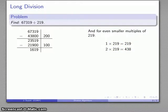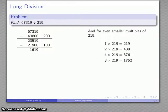I can continue to double: 2 times 219 is 438, 4 times 219 is 876, and 8 times 219 is 1,752. That's too much, but it's pretty close. If I had to estimate the quotient, it would be around 307 or 308.